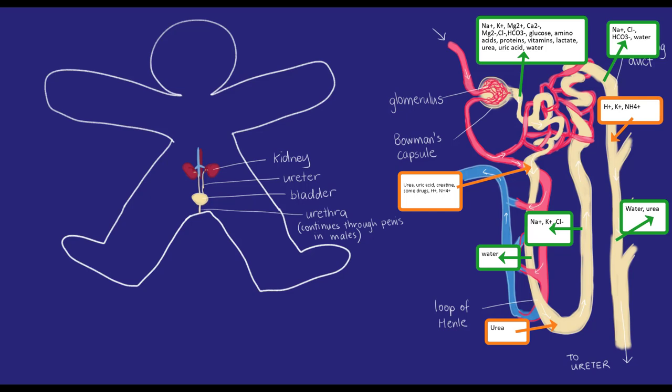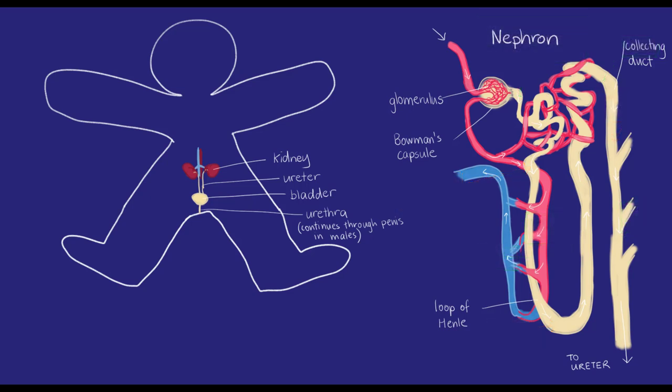The veins around the nephron take the filtered blood back to the heart to be re-oxygenated. The final waste fluid, urine, continues along the collecting duct into the ureter, which leads it to the bladder for storage until the animal urinates.